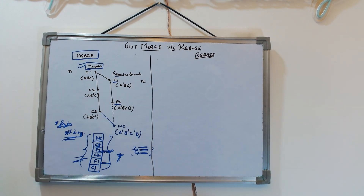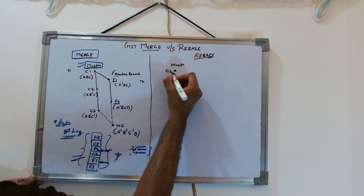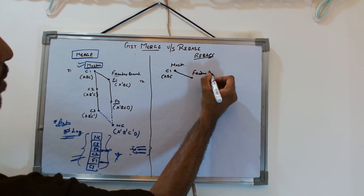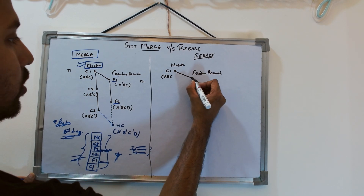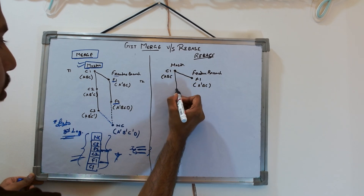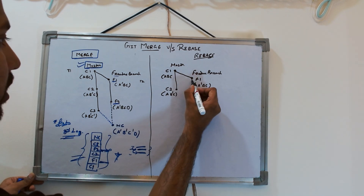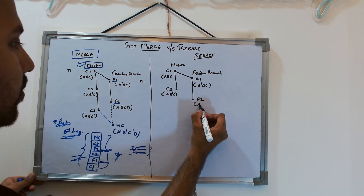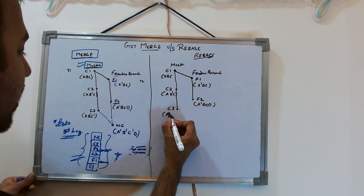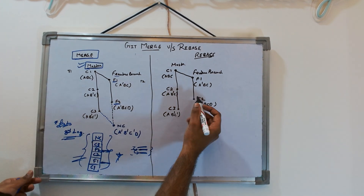Now let's see how rebase achieves the same thing. Here again is your master branch at commit C1 with changes A, B, C. You take a feature branch and make commit F1 with changes A-dash, B, C. Then an engineer contributes C2 to master with changes A, B-dash, C. You make commit F2 on feature with A-dash, B, C, D. And somebody else commits C3 on master with A, B-dash, C-dash.